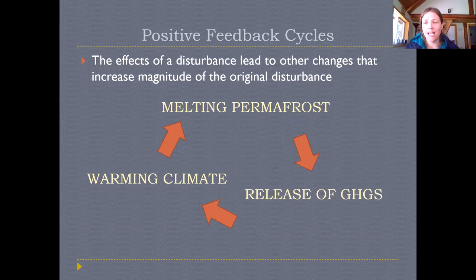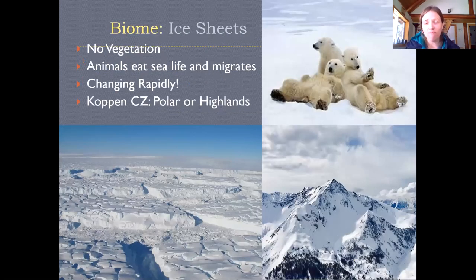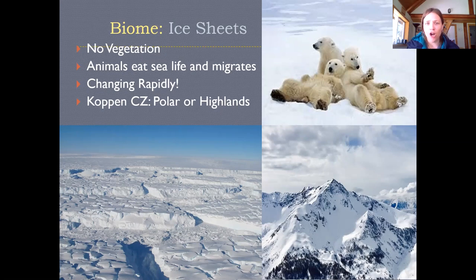The last biome is ice sheets, which have no vegetation, so any animals living here must migrate out to find food, hibernate seasonally, or go to the ocean's edge for food. Ice sheets also exist high up in mountains, where animals might migrate down to eat and hibernate. These are obviously very low productivity and density ecosystems, and they are changing very rapidly as a result of global climate change — as it gets hotter, ice melts and becomes water.